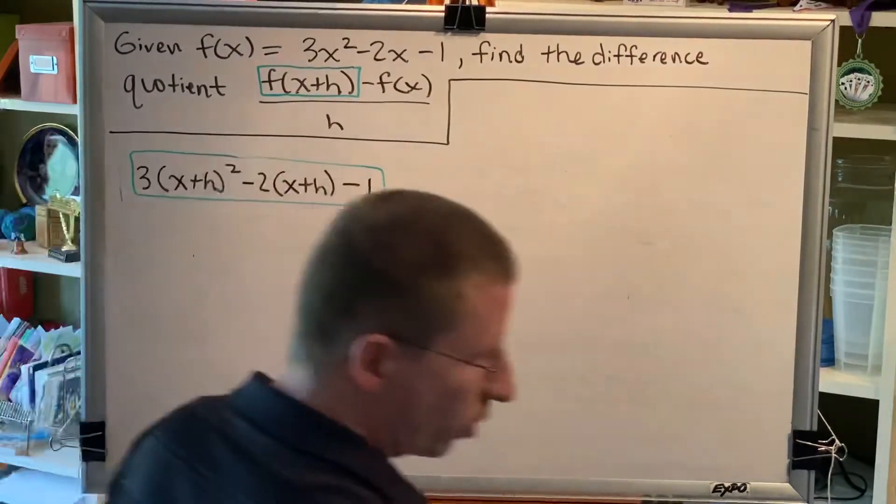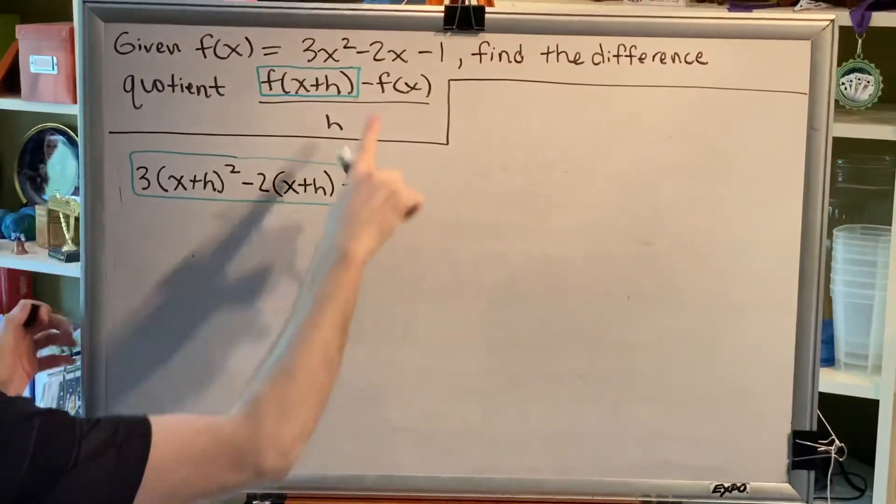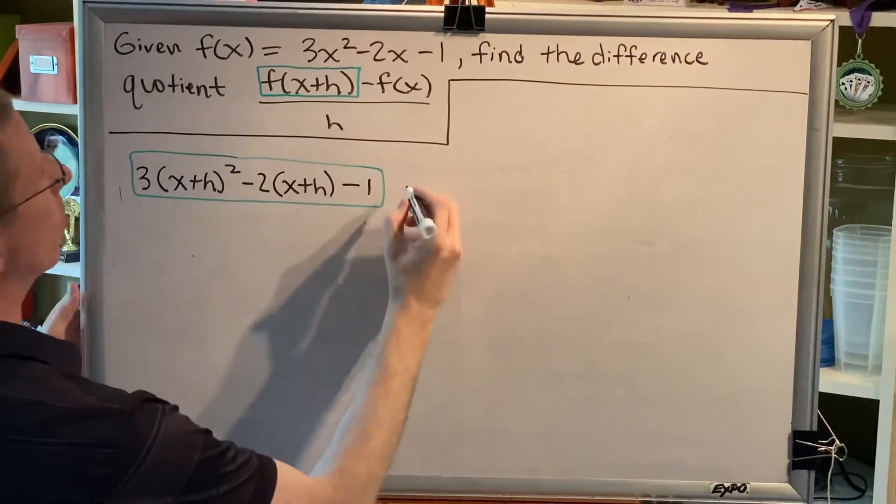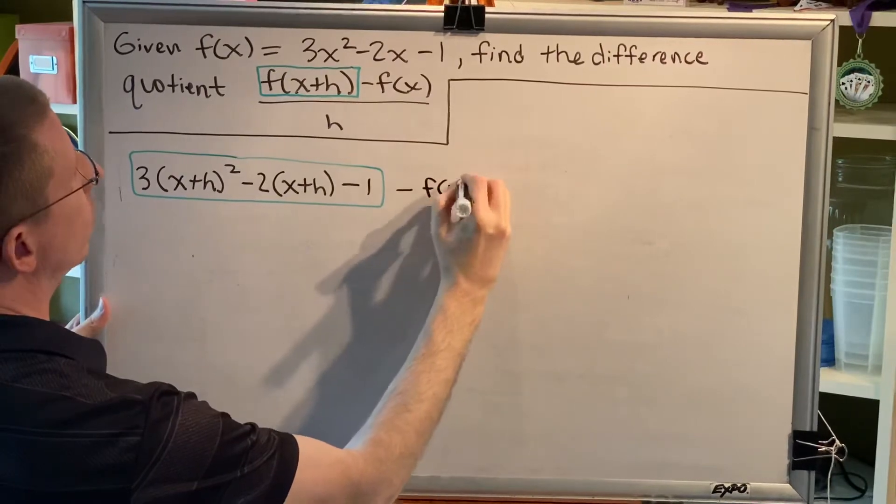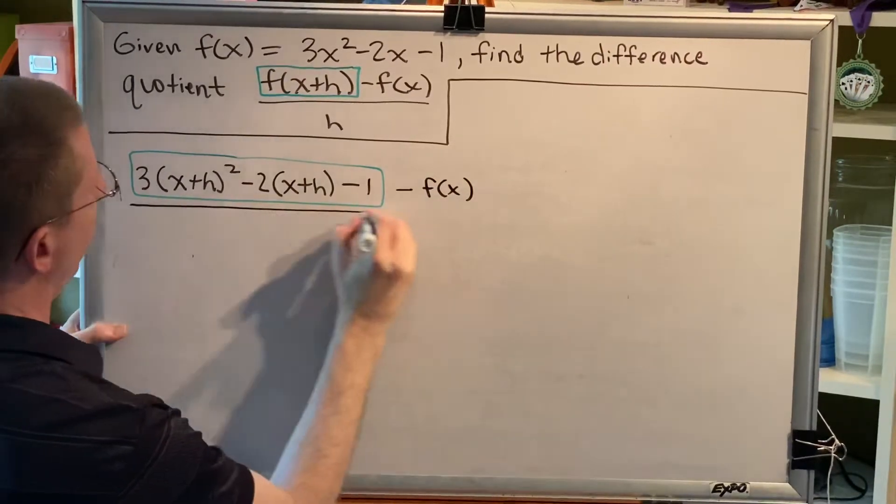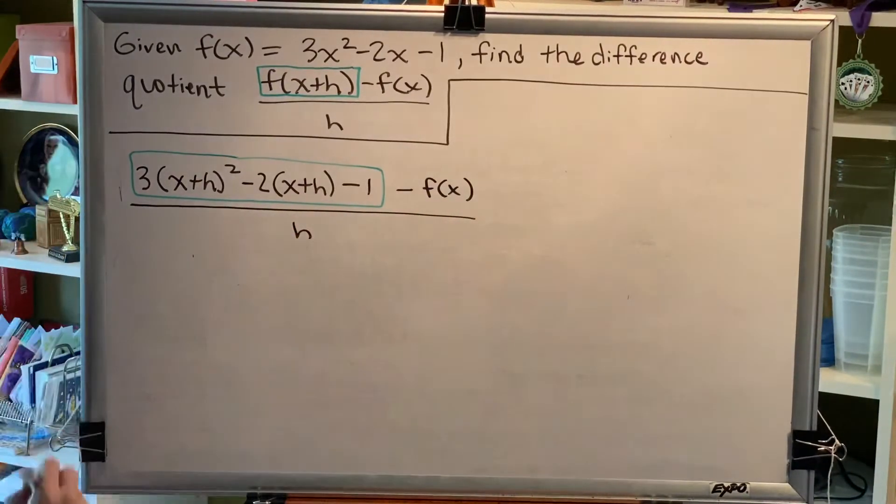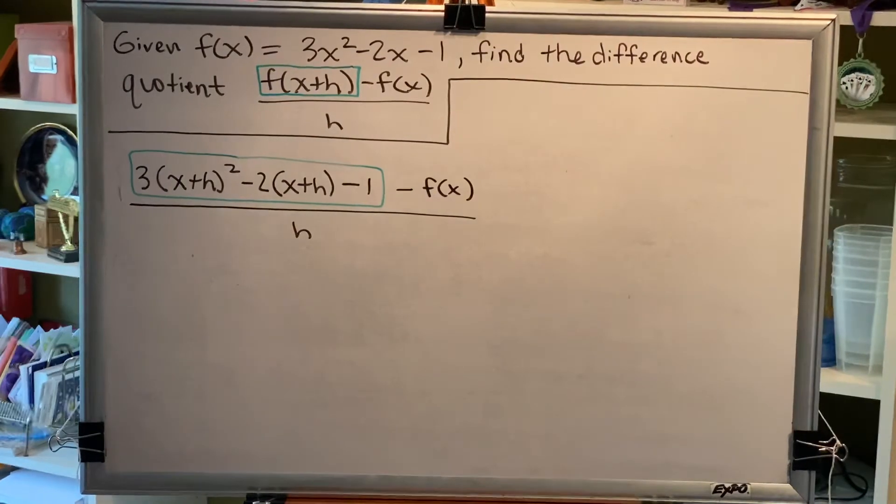But now, there's more to the problem than just this. We have to do the rest of the difference quotient. So, minus f of x over h. Let's move on to our next line.